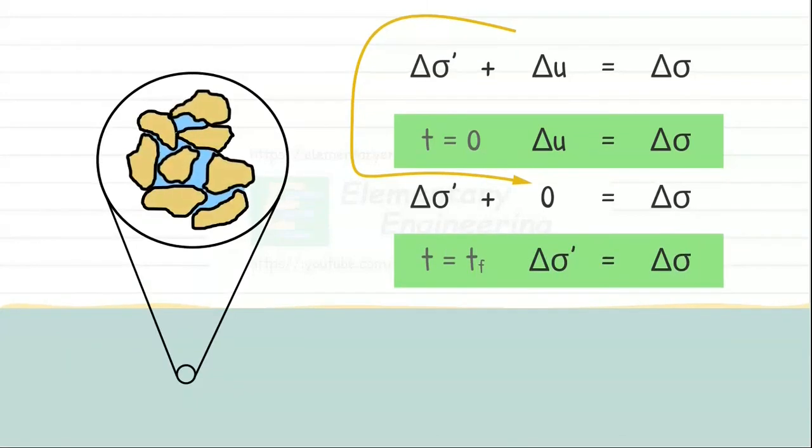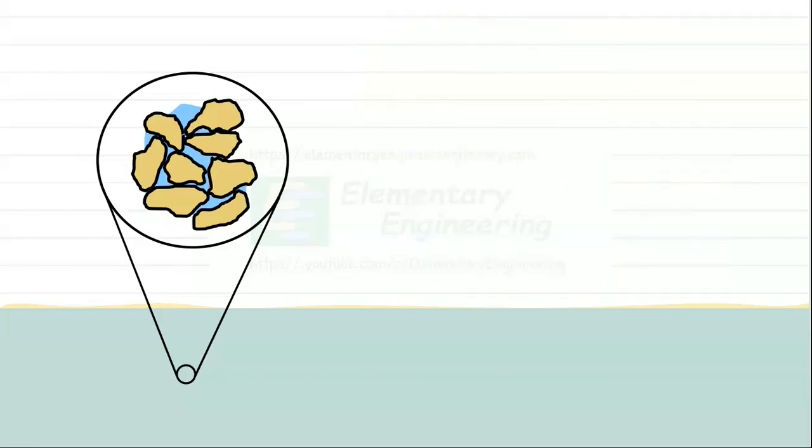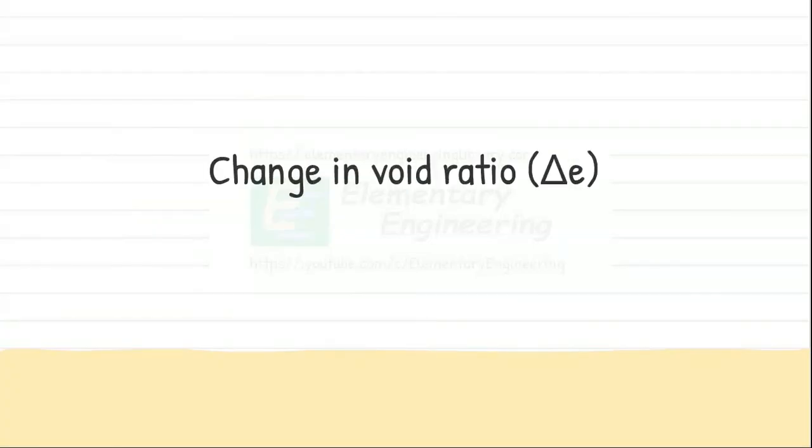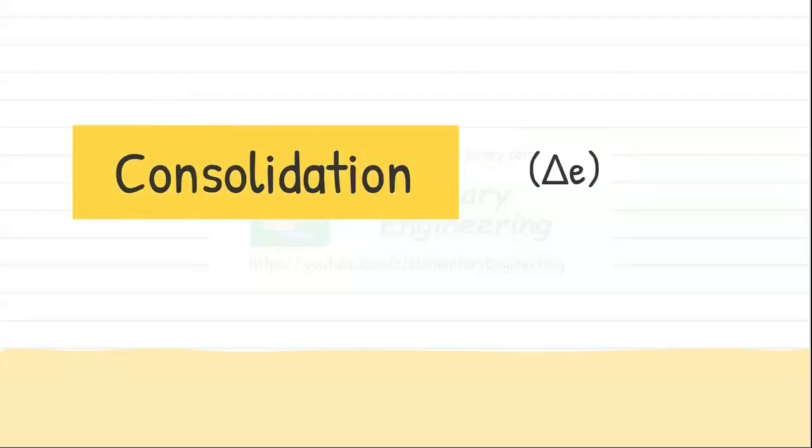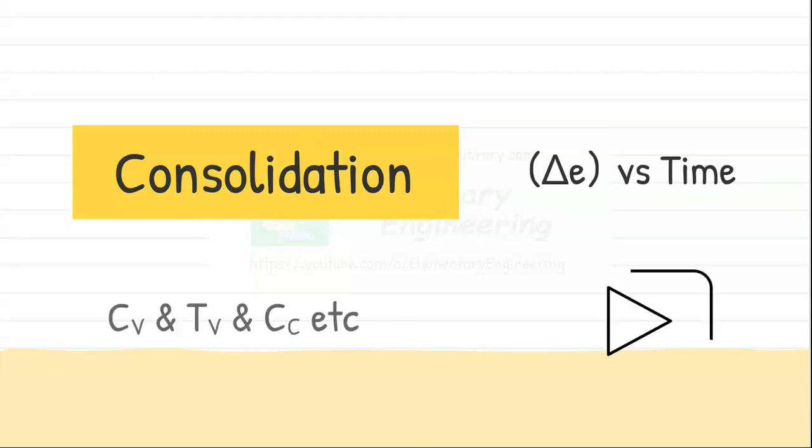As water drains out of the soil pores and effective stress on particles increases, the soil particles gradually compact and settle, leading to a reduction in the volume of soil mass. And that is consolidation. Decrease in volume of soil is generally expressed as change in void ratio. We will study more about consolidation and change in void ratio with time, and many other related things in coming videos.